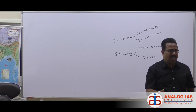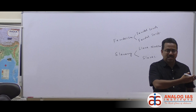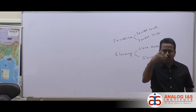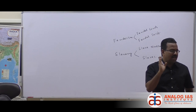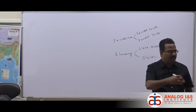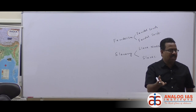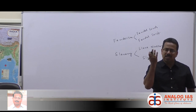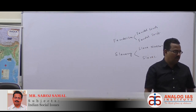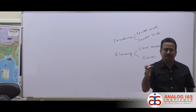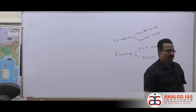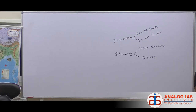Feudal lords were the owners of agricultural land, while serfs were not owners — they worked on the land, grew crops, and gave a part of the crop as rent to the lord. The proportion varied from area to area, but a part of the crop was given as rent to the owner of the land. The feudal lord was exploiting the feudal serf — the lord was not working, the serf was working and producing, yet the lord was taking a good part of the produce simply by being the owner. This was an exploitative mechanism.